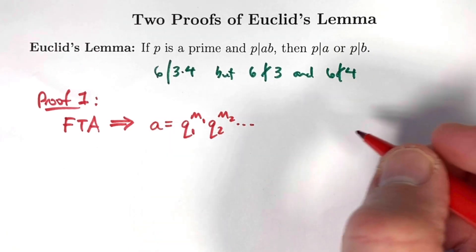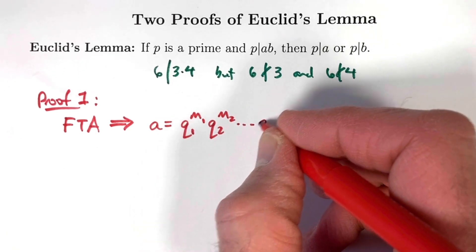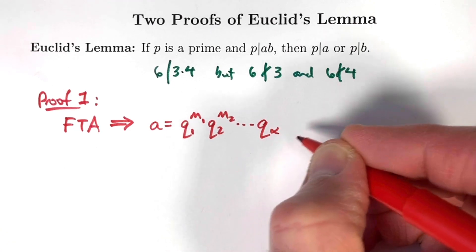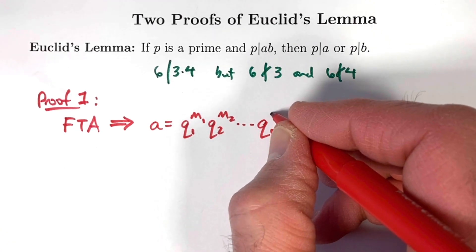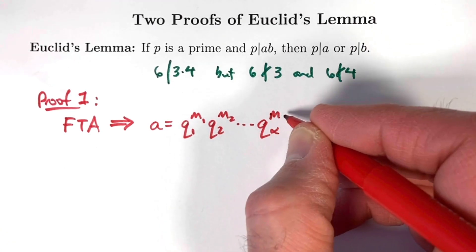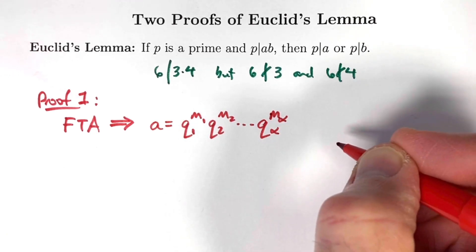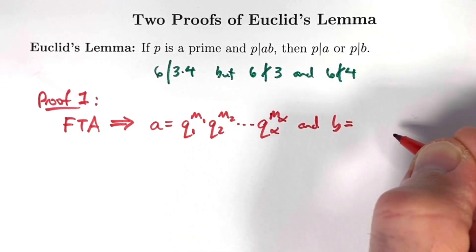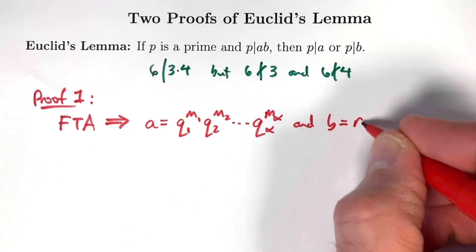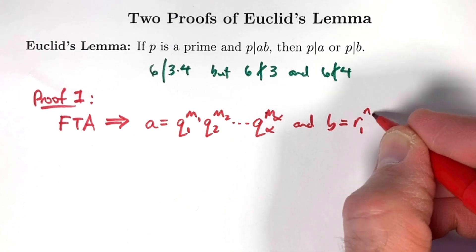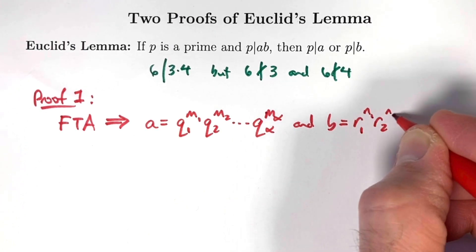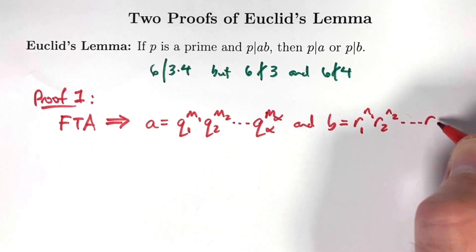There's going to be some number of unique prime factors here. Let's say there are alpha of them. The last prime factor is going to be q_α^m_α, and b is going to be written in some similar kind of way, say r₁^n₁ times r₂^n₂, etc., down to r_β^n_β.